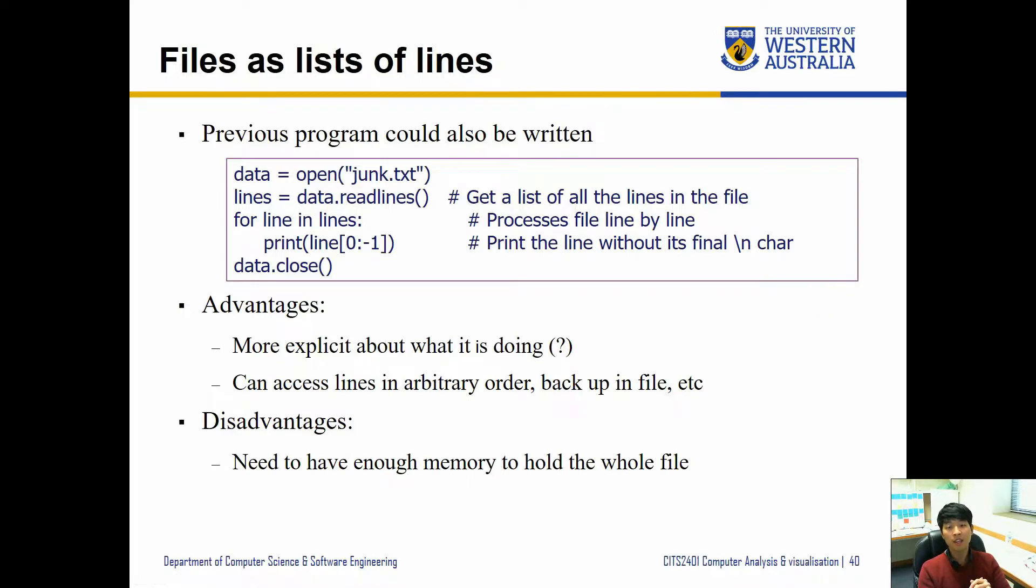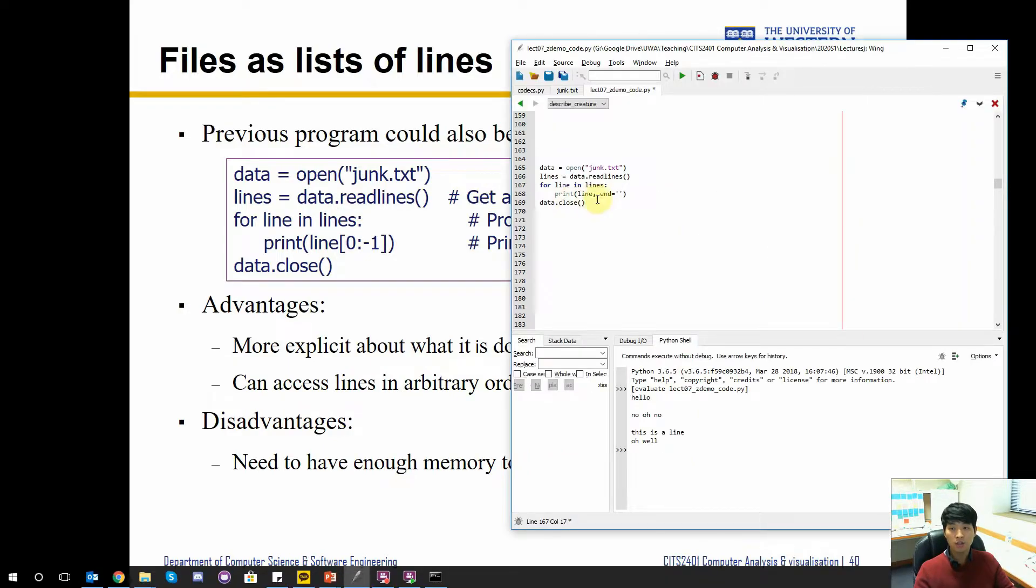However, the advantage here is that it's more explicit about what we're doing and can access lines in arbitrary order. That means I don't have to iterate through one at a time. Maybe I want to access line number five or six before I go through each line. If I don't use this readlines method associated with this data object, then I have to go through line at a time.